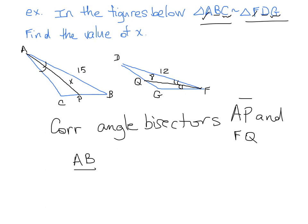AB over FD will be equal to AP, our bisector, over FQ, our bisector in the second triangle. So we can go ahead and fill in our values. AB is 15 over FD, which is 12, is equal to AP, which is X, what we're trying to find, over FQ, which is 8. Now we can go ahead, cross multiply.